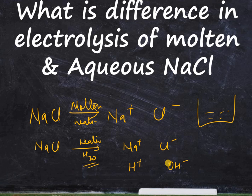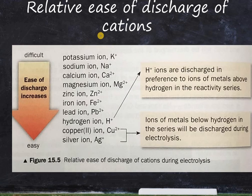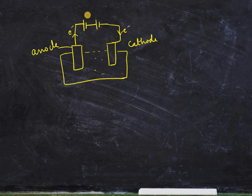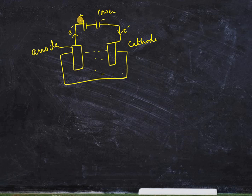When talking about the molten stage, there are only two ions in the solution. The electrolysis setup has a cell with a battery as the power supply, which pulls electrons out. The cathode is attached to the negative terminal of the battery, and the anode is connected to the positive terminal. Negatively charged ions are attracted to the anode.